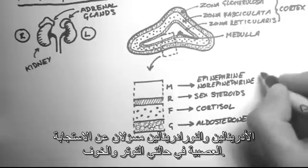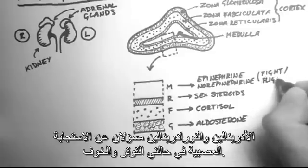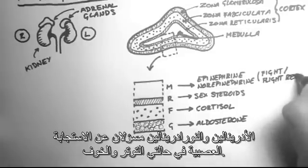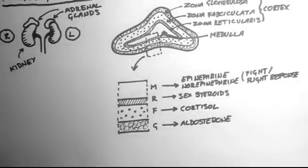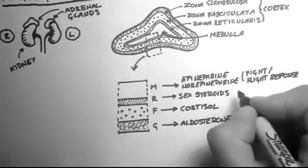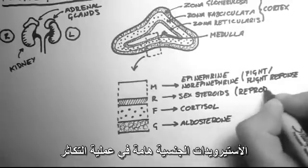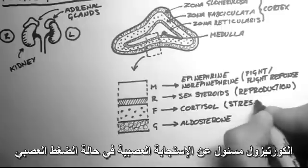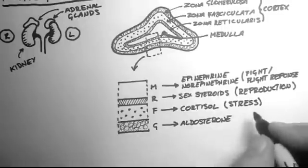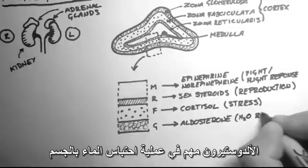Epinephrine and norepinephrine are signals of the fight or flight response. The sex steroids are important for reproduction. Cortisol is a stress signal. And aldosterone is important in water retention.